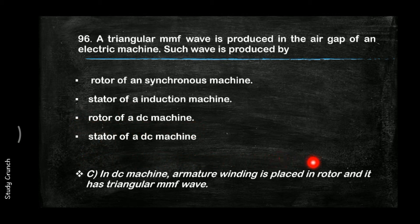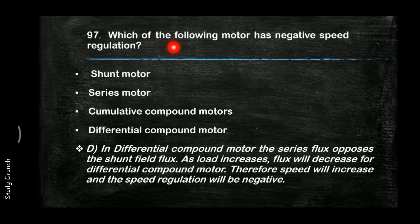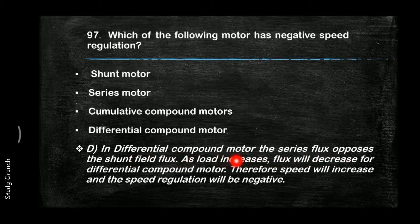Which motor has a negative speed regulation? The answer is the differential compound motor. In this motor, the series flux opposes the shunt field flux. As load increases, the flux also increases, causing the speed to increase, resulting in negative speed regulation.